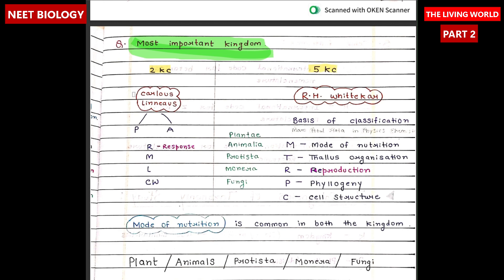Second kingdom classification was given by Carlos Linnaeus, and fifth kingdom classification was given by R.H. Whittaker. In second kingdom classification it is divided into Plantae and Animalia, and in fifth kingdom classification it is divided into Plantae, Animalia, Protista, Monera, and Fungi. The basic classification is done by mode of nutrition, thallus organization, reproduction, phylogeny, and cell structure. Mode of nutrition is very common in both kingdom classifications.